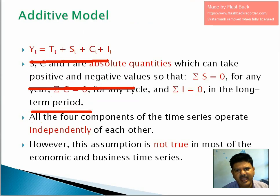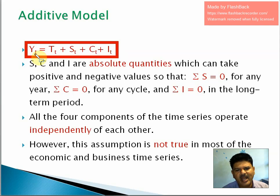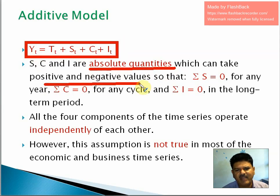So what is the additive model? In the additive model, all four components of time series are added together: Y = T + S + C + I. T stands for trend, S stands for seasonal variation, C stands for cyclical variation, and I stands for irregular variation. Y is the estimated value from this model, and all these are absolute quantities which can take positive and negative values.